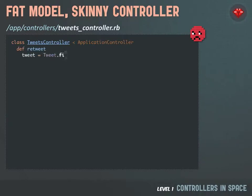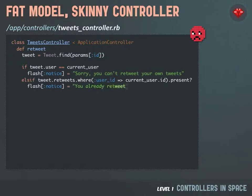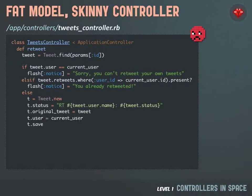The tweets controller has a retweet action which fetches a tweet. If the person who created that tweet is us, then we're going to simply return — sorry, you can't retweet your own tweets. If we've already retweeted that tweet, we're simply going to say you've already retweeted this. Otherwise, we're going to go ahead and create the retweet. You can see that string we're putting together with the RT keyword that you see across Twitter a lot. We'll then give notice that we successfully retweeted and redirect back to showing that particular tweet.